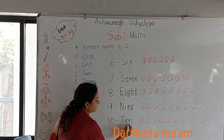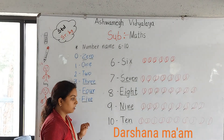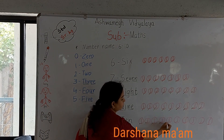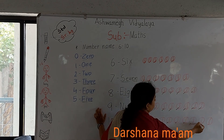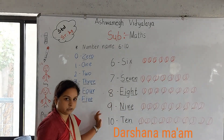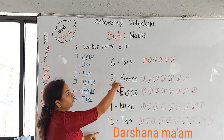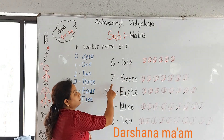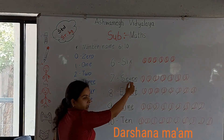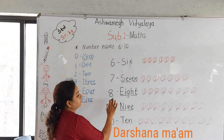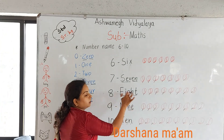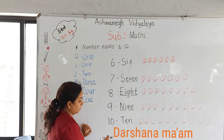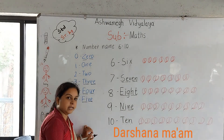Our object is ball. Count with me: 1, 2, 3, 4, 5, 6, 7, 8, 9, and 10. Okay students. Review: number 8 - E-I-G-H-T, number 9 - N-I-N-E - 9, number 10 - T-E-N - 10.